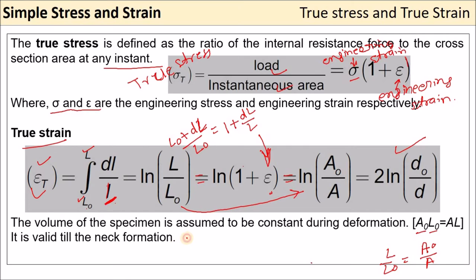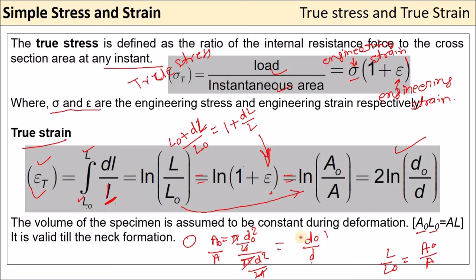For a circular cross-section, area = πd²/4. So A₀/A = (πd₀²/4)/(πd²/4) = (d₀/d)². Therefore, true strain εt = ln(d₀/d)². These are the formulas to calculate true stress and true strain.